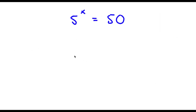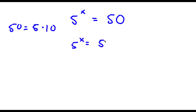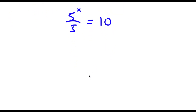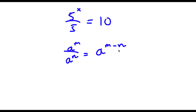For the second bonus problem: 5 to the power of x is equal to 50. Now 50 is the same thing as 5 times 10, so I have 5 to the power of x is equal to 5 times 10. I'm going to divide both sides by 5, so these cancel and I have 5 to the power of x over 5 is equal to 10. Now 5 is the same as 5 to the power of 1, so 5 to the power of x over 5 to the power of 1 equals 5 to the power of x minus 1, which is equal to 10.